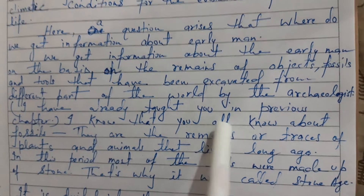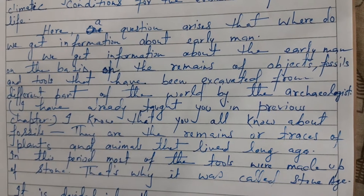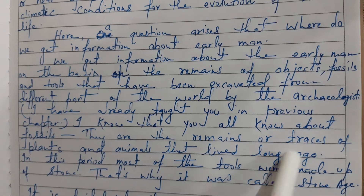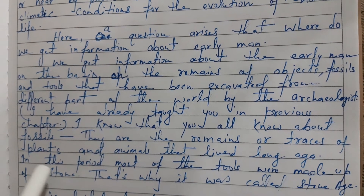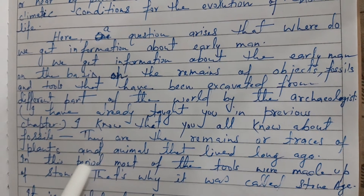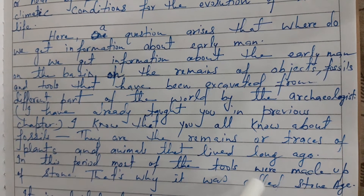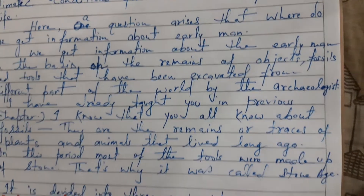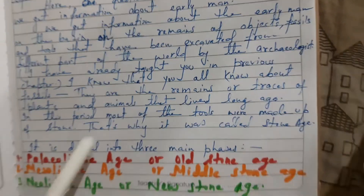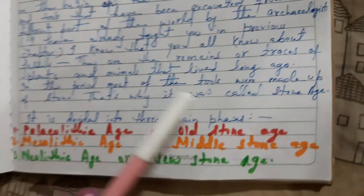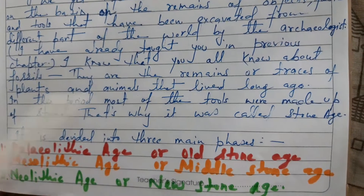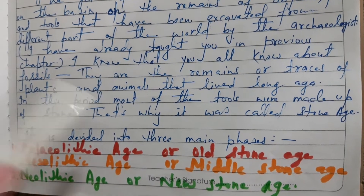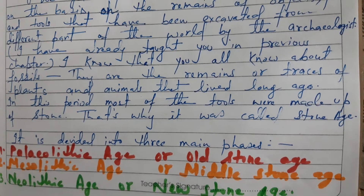Fossils are the remains or traces of plants and animals that lived long ago. In this early period, most of the tools were made of stones — that is why it is known as the Stone Age.